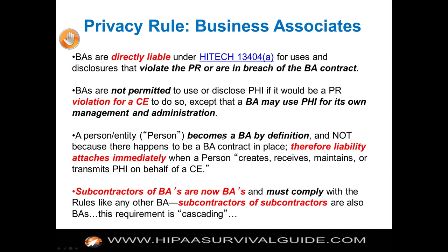If you create, receive, maintain, or transmit PHI on behalf of a CE, you're on the hook — you're a business associate. Subcontractors of BAs are now also BAs, creating a chain that must comply with the rules, meaning you have to have a BA-to-BA agreement. As part of our subscription plan, we have a business associate contract for use between a covered entity and a business associate, and one for use between two business associates.